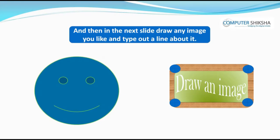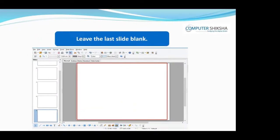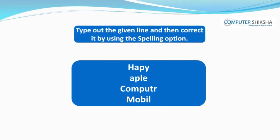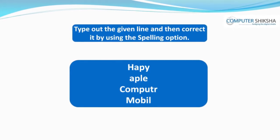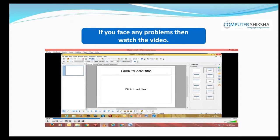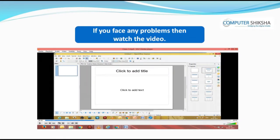And then, in the next slide, draw any image you like and type out a line about it. Leave the last slide blank. Type out the given line and then correct it by using the spelling option. If you face a problem, then watch the video and learn from it.